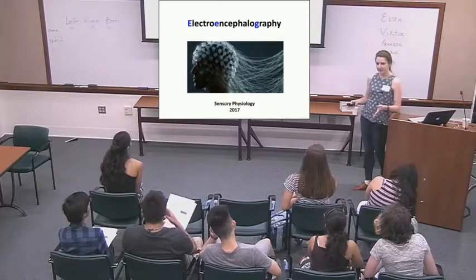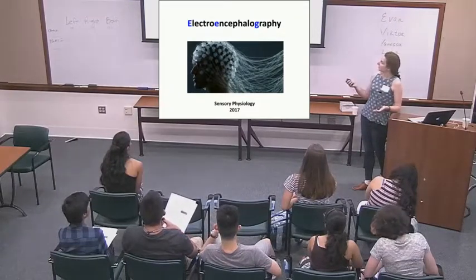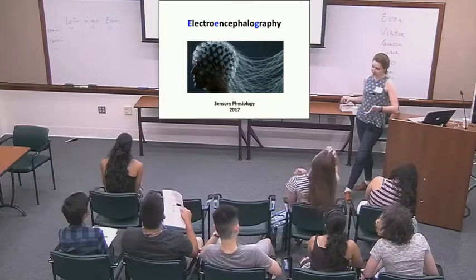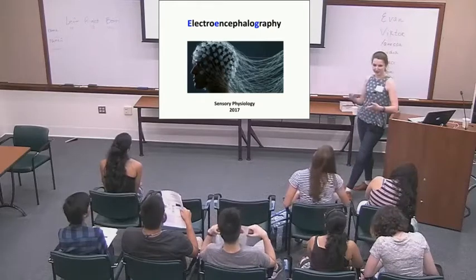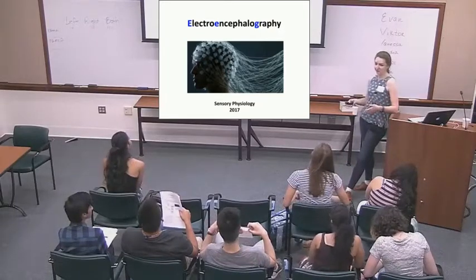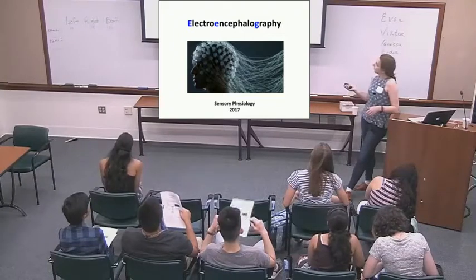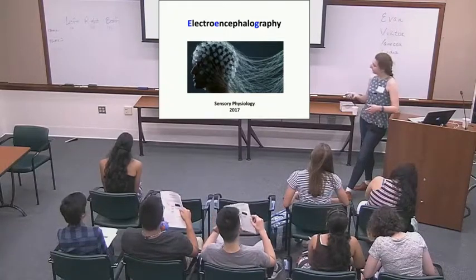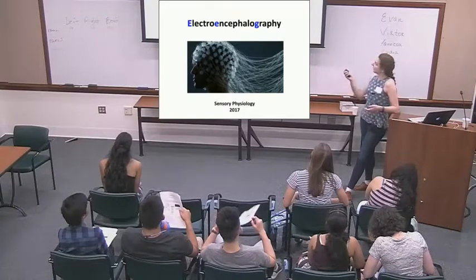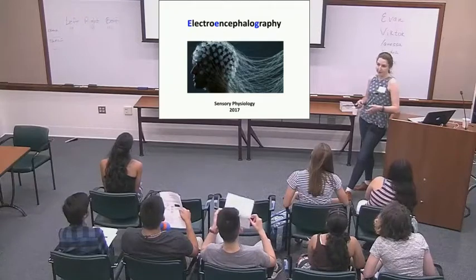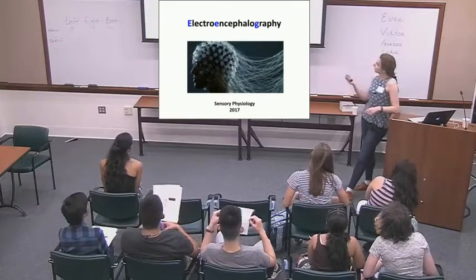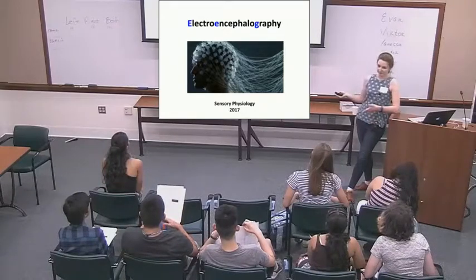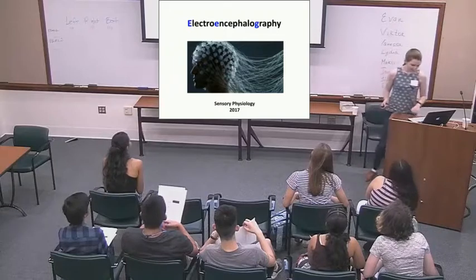Let's break down the word electroencephalography. The first part, 'electro,' sounds like electricity, which is a very central concept in neuroscience because all the nerve cells run on electricity and we can measure that electricity. 'Encephalo' is Greek for the head or the brain, and 'graphy' means a graph or a picture. So basically this word means you are making a graph of the electricity in the brain.